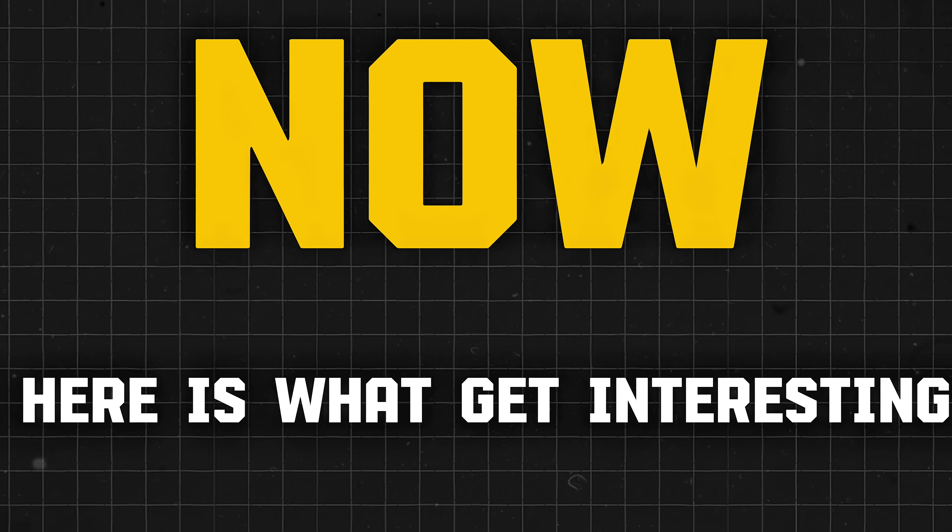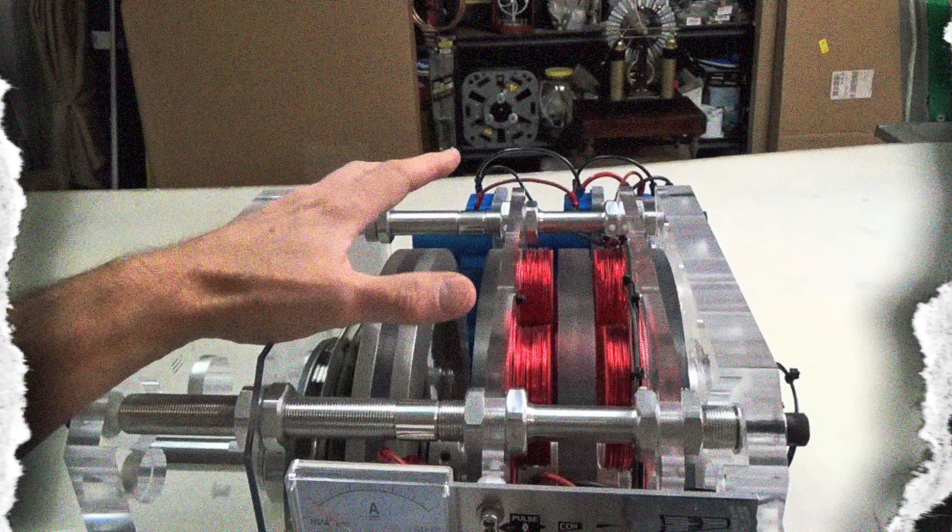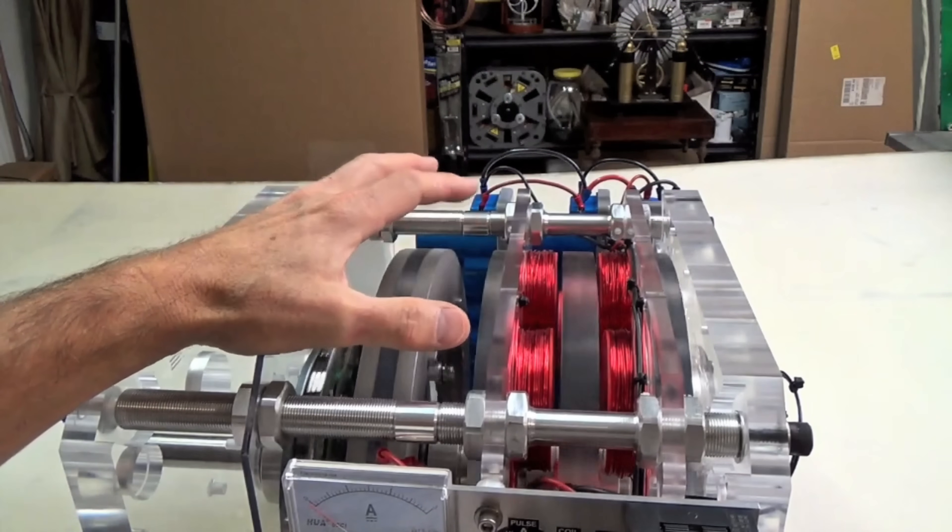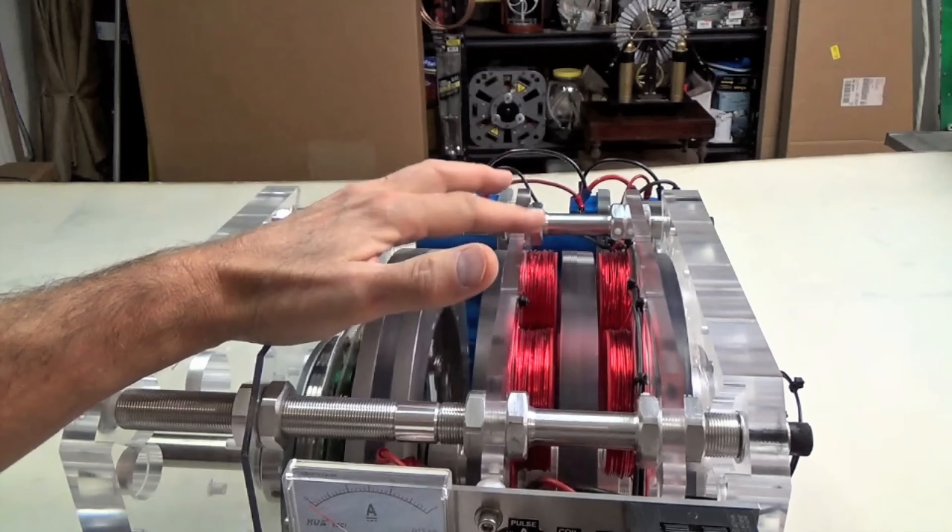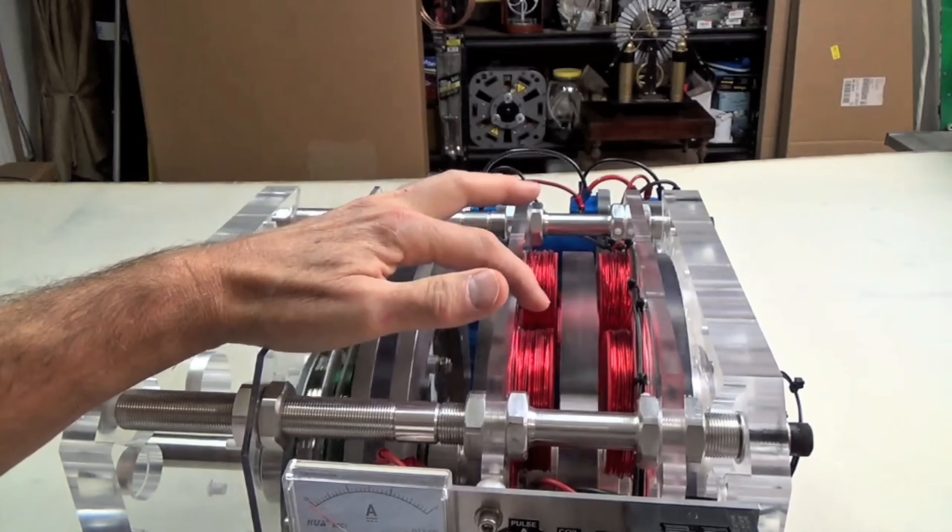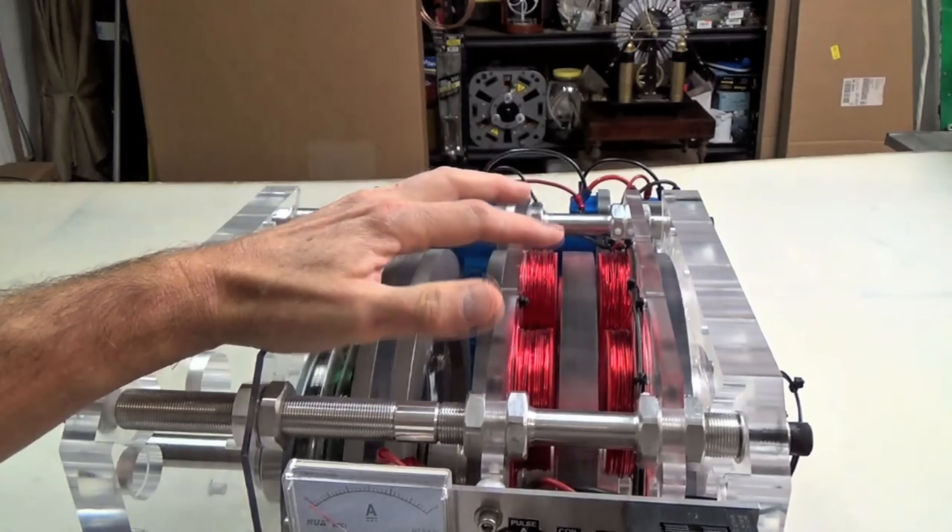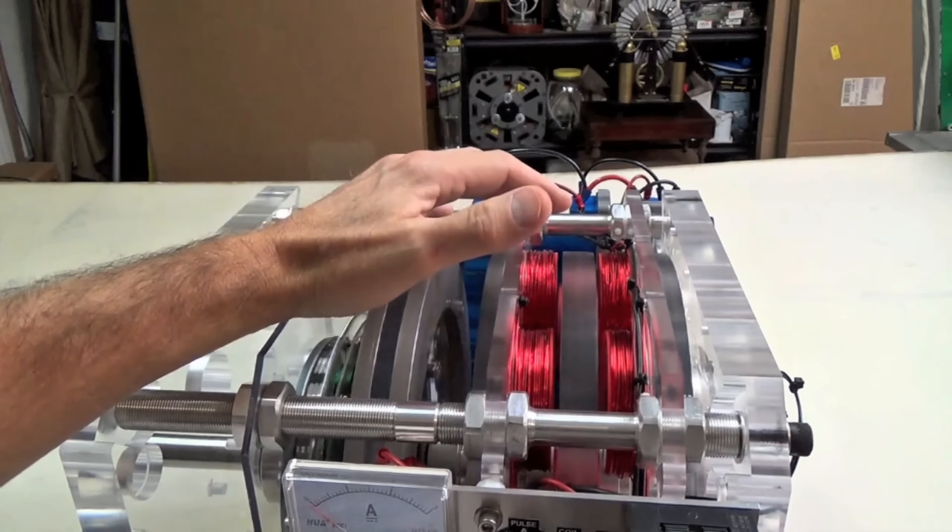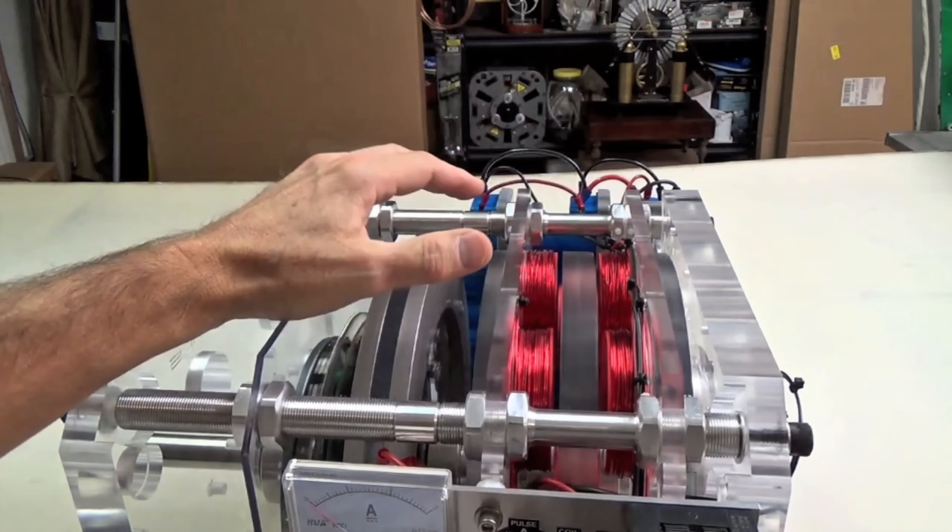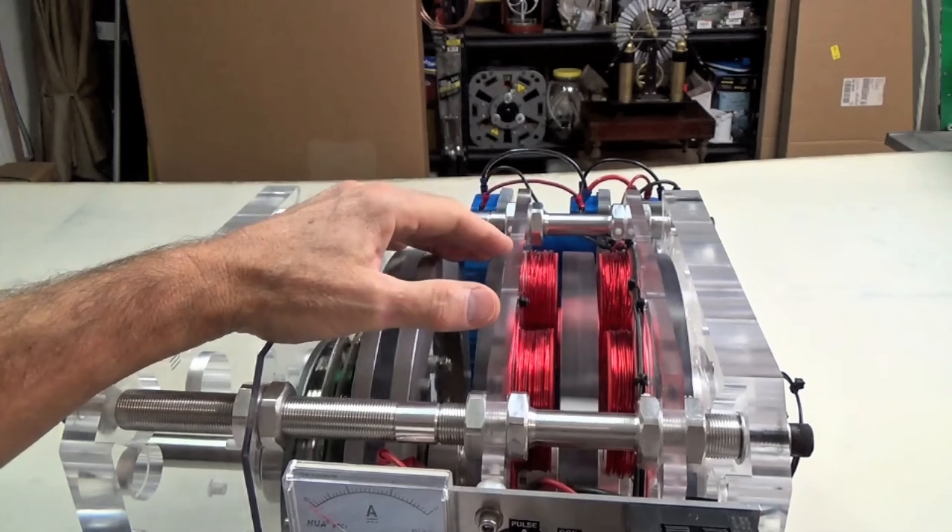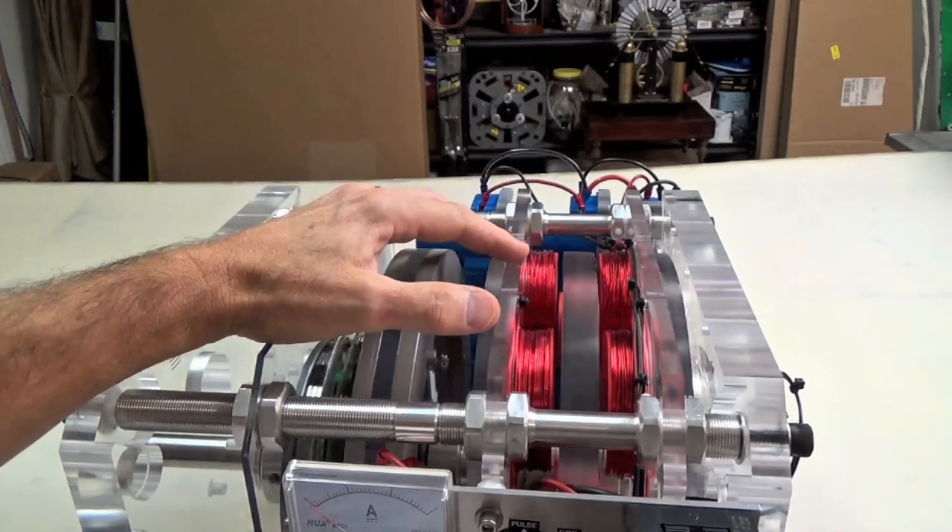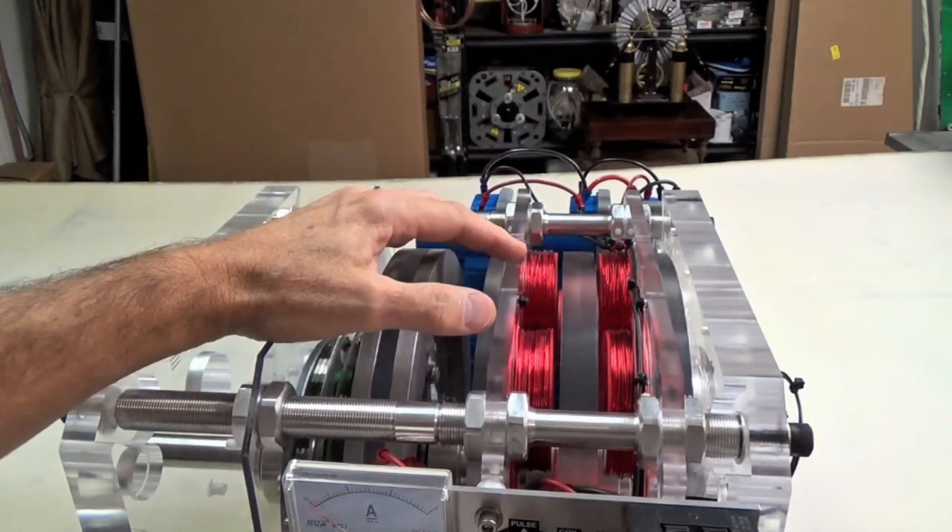Now, here's where it gets interesting. The inventors built a generator right into the flywheel itself. Usually, if you want electricity from a spinning wheel, you put a separate generator somewhere and connect it by belts or gears. But in this machine, a compact three-phase alternator, a type of small generator that produces alternating current, is mounted inside the outer rim of the flywheel.